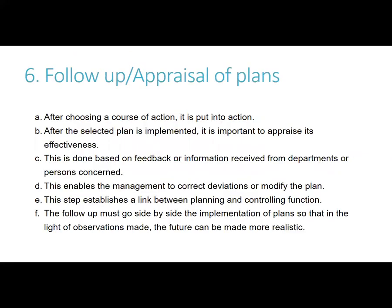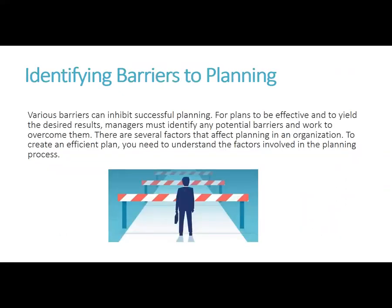Sixth, follow-up and appraisal of plans — after the selected plan is implemented, it is important to appraise its effectiveness based on feedback from departments or persons concerned. Basically, is the plan working? Then you need to identify barriers — what could get in our way? If our plan is the receipt survey, a barrier might be the receipt machine stops working. You have to identify some ways around that — maybe move surveys online. You have to identify those barriers to make sure you know how to build your plan B's and plan C's.